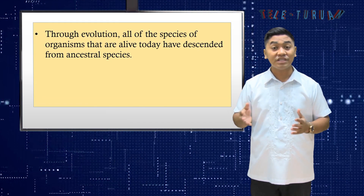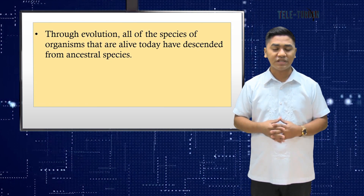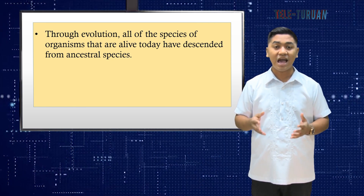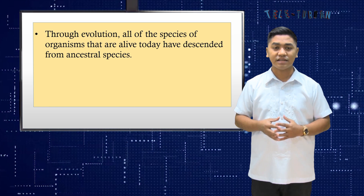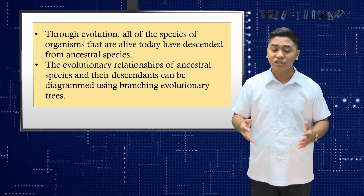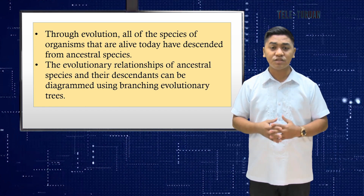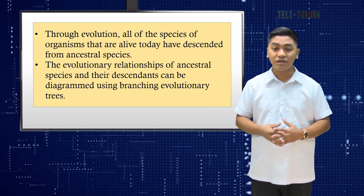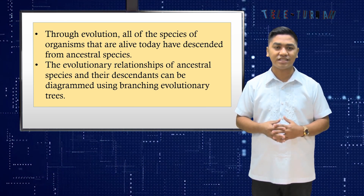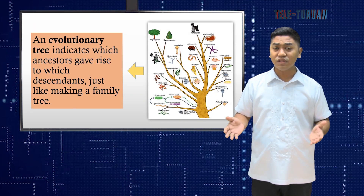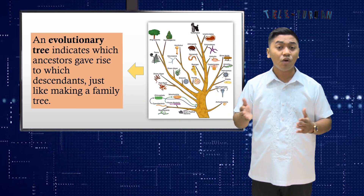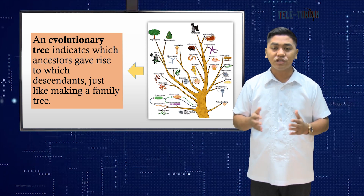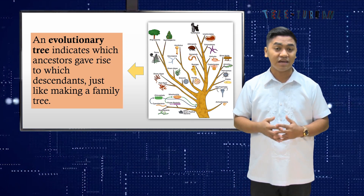Through evolution, or simply change over time, all of the species of organisms that are alive today have descended from ancestral species. The evolutionary relationships of ancestral species and their descendants can be diagrammed using branching evolutionary trees. An evolutionary tree indicates which ancestors gave rise to which descendants, similar to making a family tree.